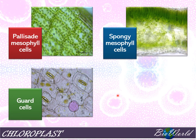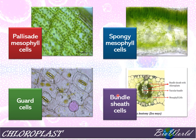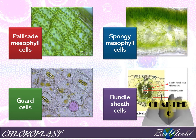There is also another cell type — the bundle sheath cells — which are found in the leaves of plants. I will teach you about bundle sheath cells in chapter 6.